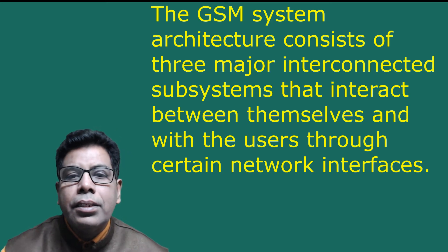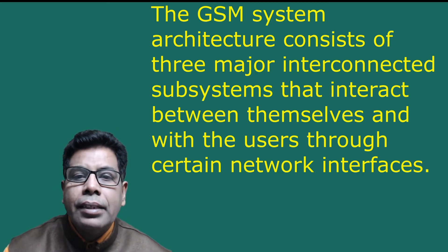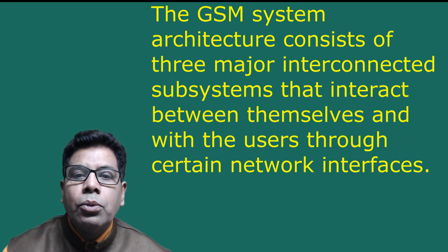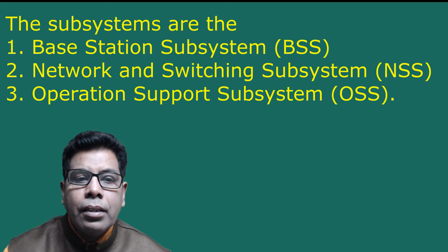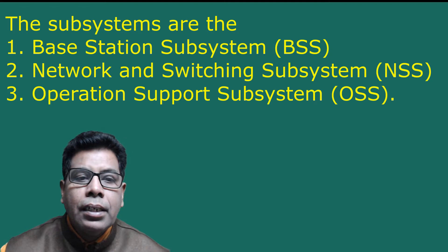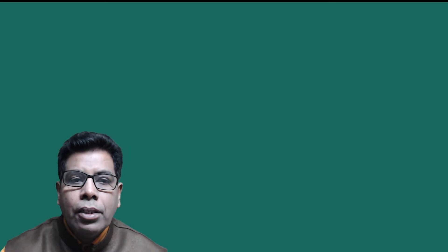The GSM architecture consists of three major interconnected subsystems that interact between themselves and with the users through a certain network interface. The subsystems are: the base station subsystem (BSS), the network and switching subsystem (NSS), and the operation support subsystem (OSS). The mobile station is also a subsystem but is usually considered to be part of the base station subsystem for architecture purposes.